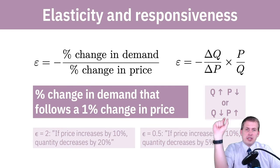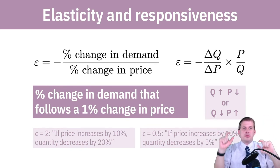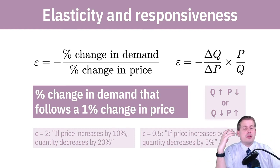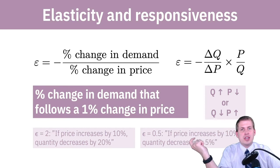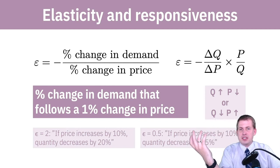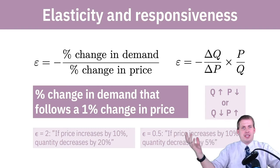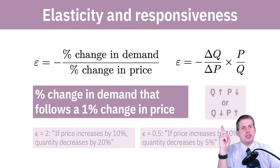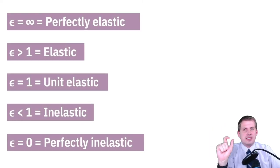One thing to remember: this assumes quantity and price move in opposite directions — if a thing gets more expensive, people will buy less of it. That is called a normal good. That's not always the case — you can have goods where if the price goes up, people actually buy more, like Louis Vuitton or Rolexes. The more expensive they are, the more people buy them because it's a luxury good. But normally, if quantity goes up price goes down, or if quantity goes down price goes up.